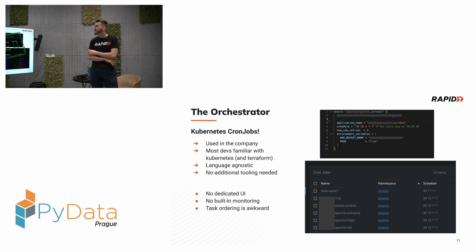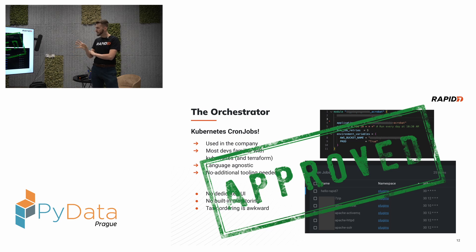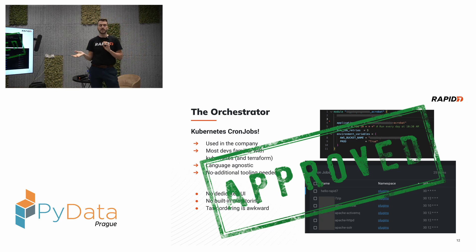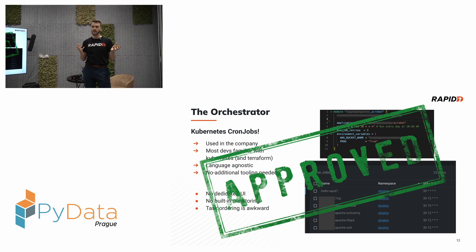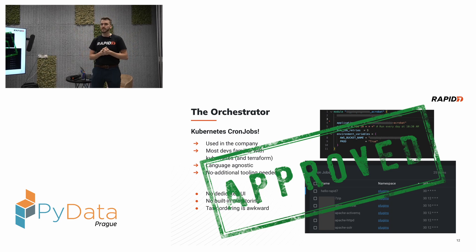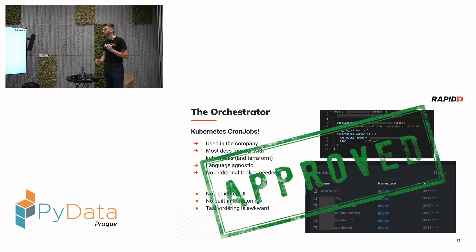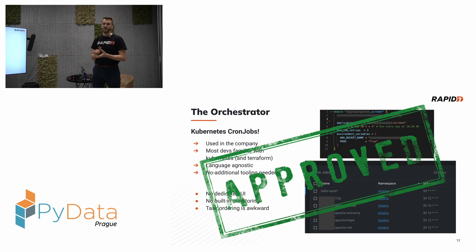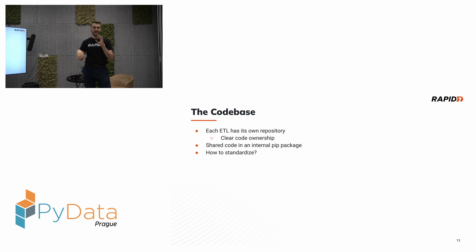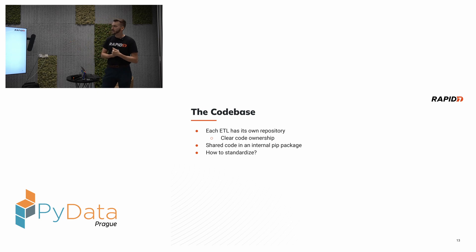With our platform chosen, we needed to think about how to organize our codebase. We have around 40 developers in our broader team, distributed across three locations — Prague, Toronto, and Belfast — so we need to be loosely coupled. The decision was made that each ETL would have its own repository, which is quite a bold decision because you then need to make sure things stay standardized and don't diverge.